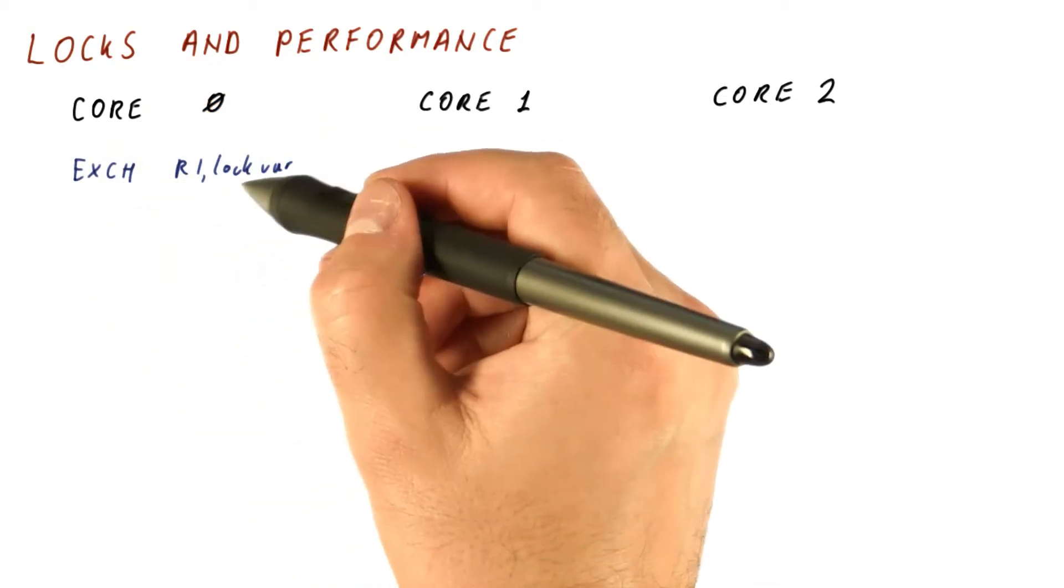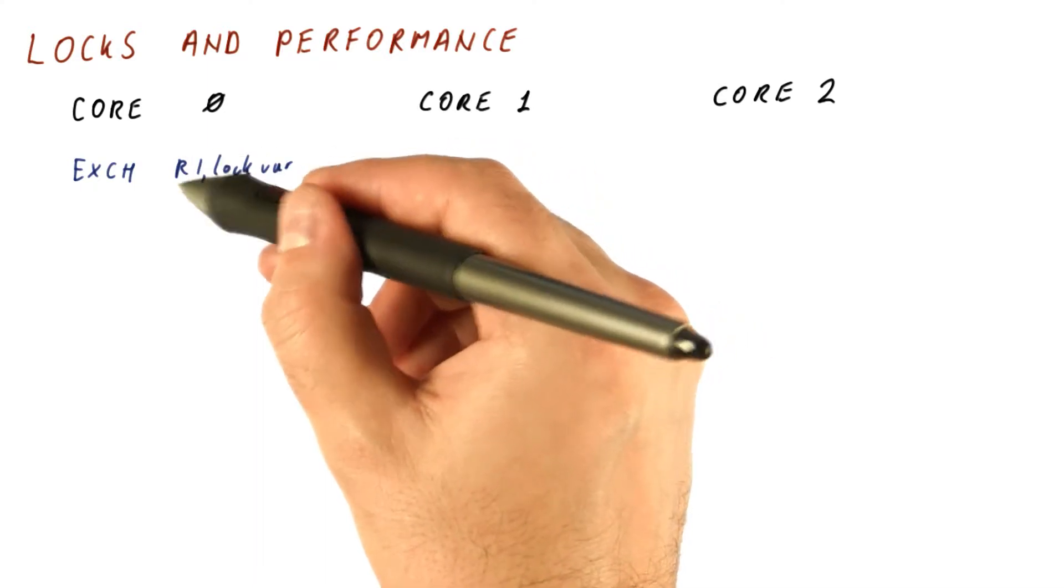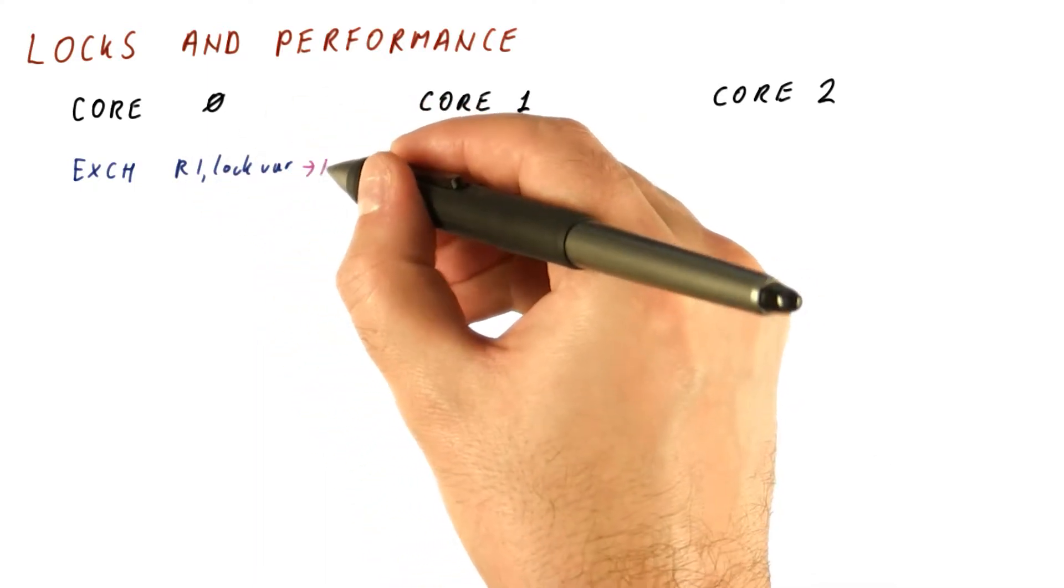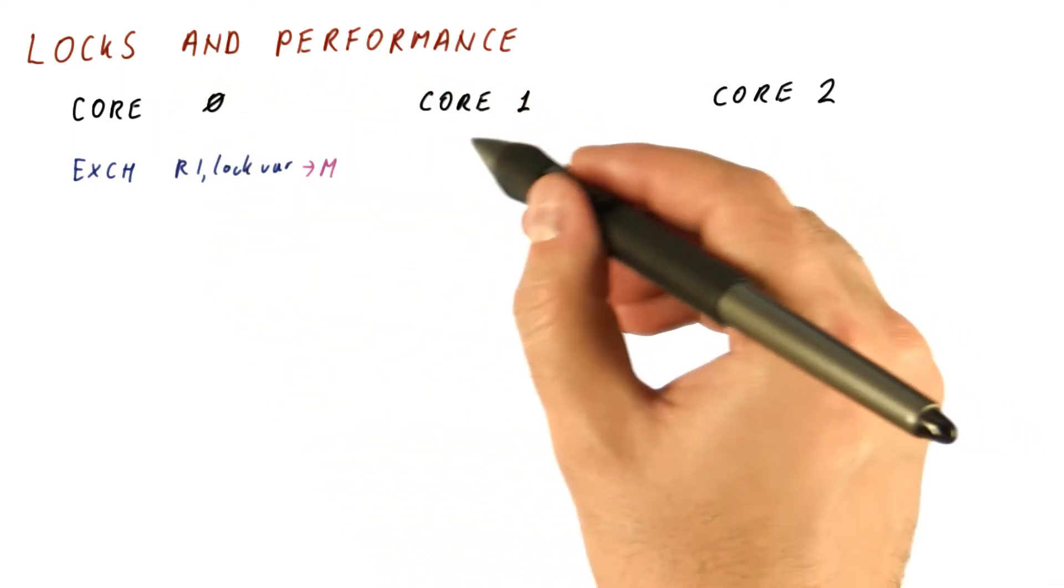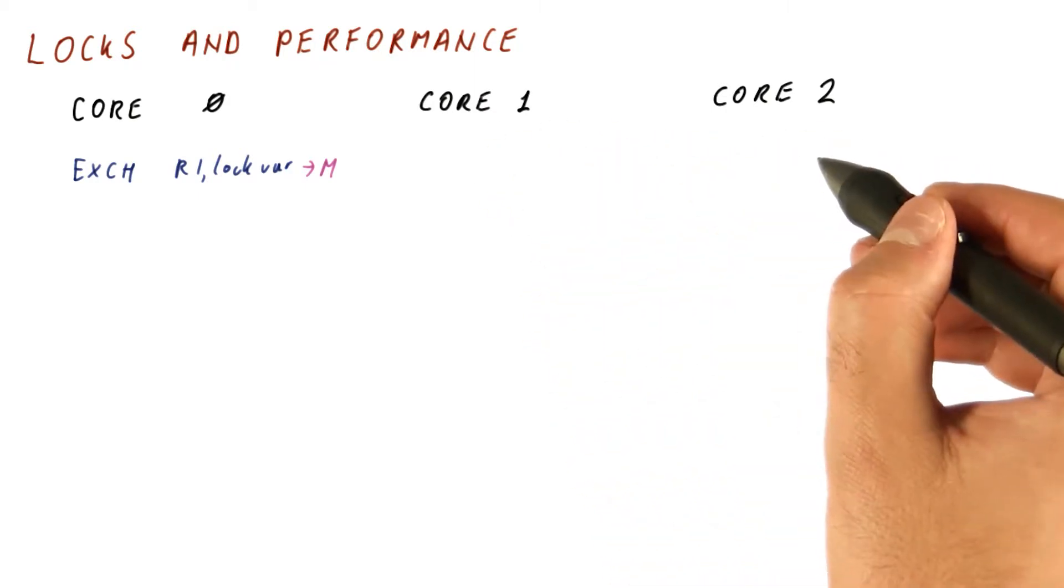Core zero, let's say, tries to grab the lock first and it succeeds. It does an atomic exchange, gets that the lock was free. The lock var is now going to be in the modified state in the cache of core zero, and it's not going to be present in core one and core two's caches.